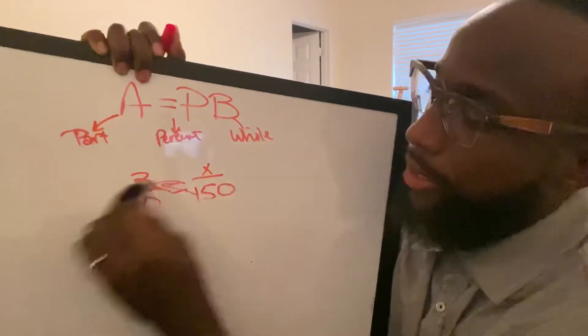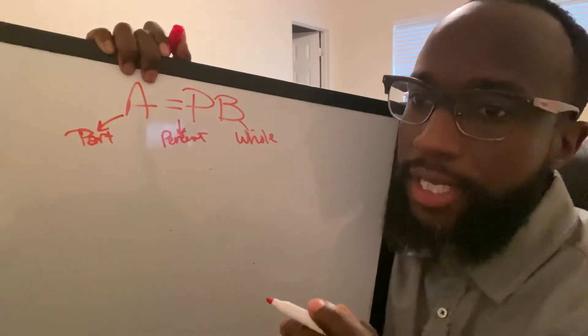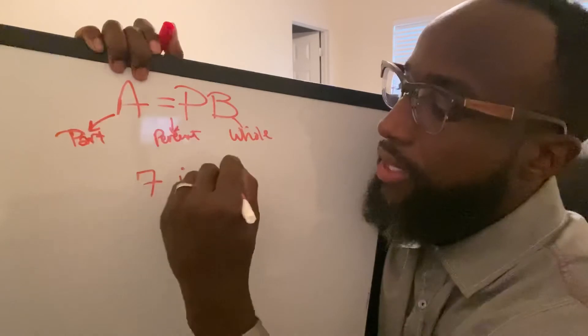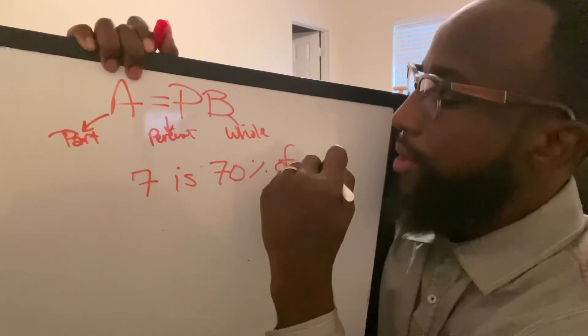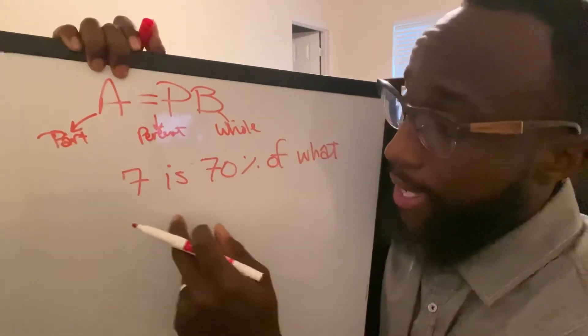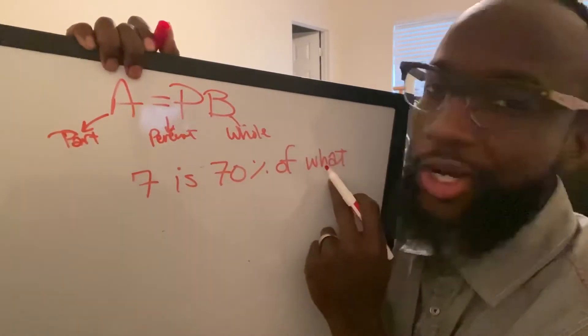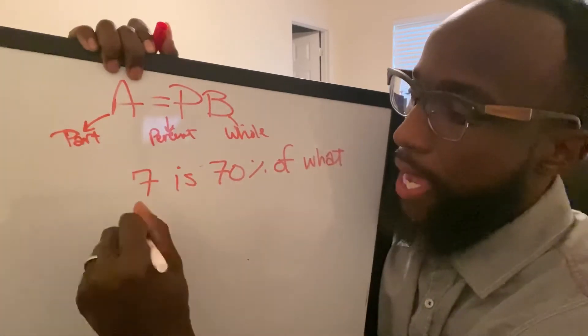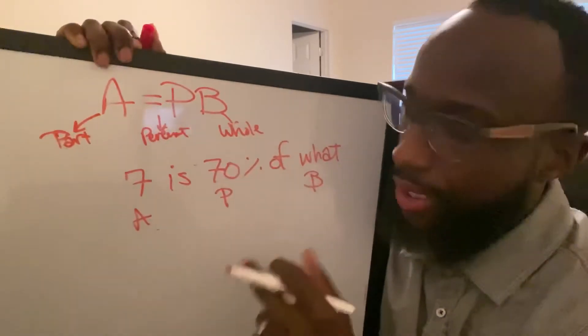Let's look at another example. We found the part - this is how we find the part. The X is at the top. What if they said 7 is 70% of what number? In this case, we know the part, we know the percent, we just don't know what the whole number is. So this is A, this is P, we don't know B.